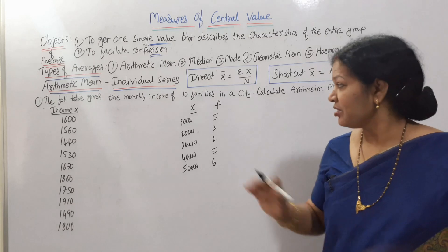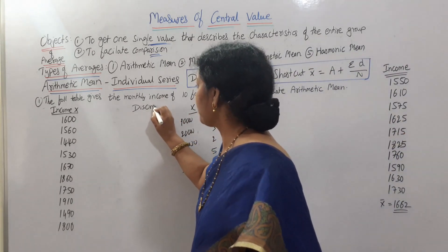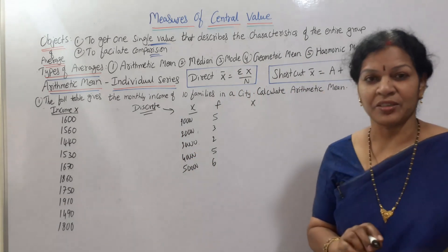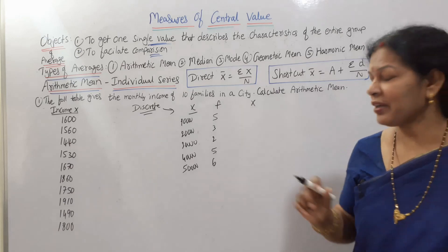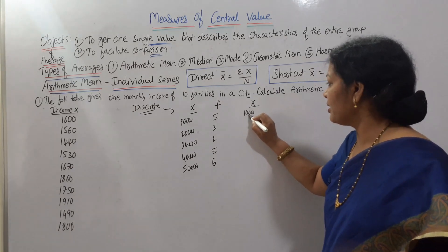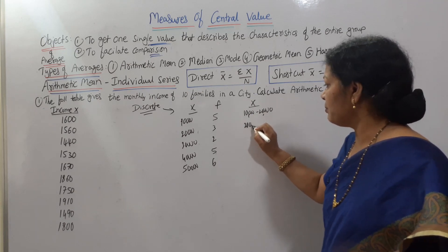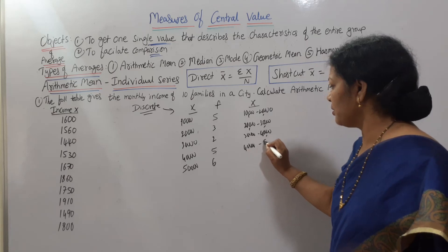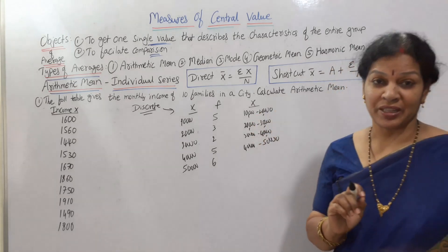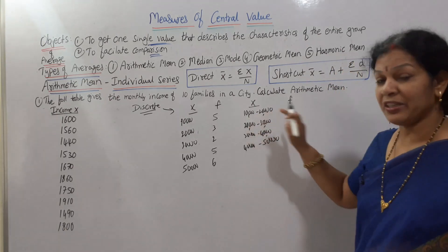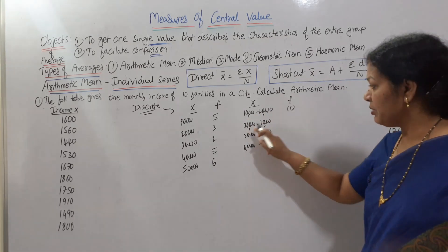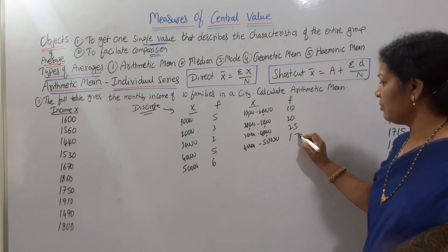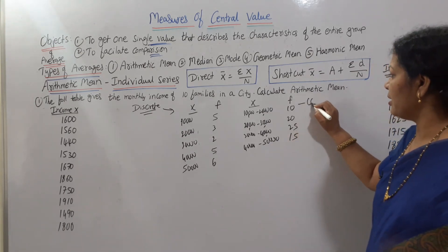In continuous series, x is given as a class interval — for example, 10,000 to 20,000, 20,000 to 30,000, 30,000 to 40,000, and 40,000 to 50,000. We take class intervals and for each, frequency is given — how many people fall within that range. For instance, 10 employees between 10,000 to 20,000, 20 between 20,000 to 30,000, 25 between 30,000 to 40,000, and 15 between 40,000 to 50,000. This is called continuous series.